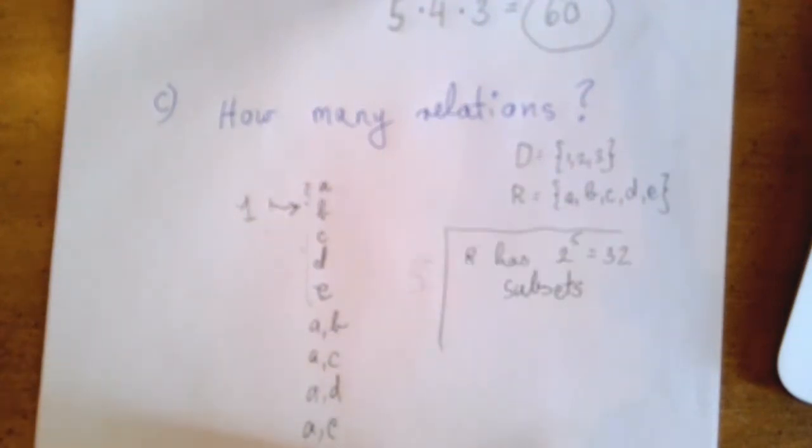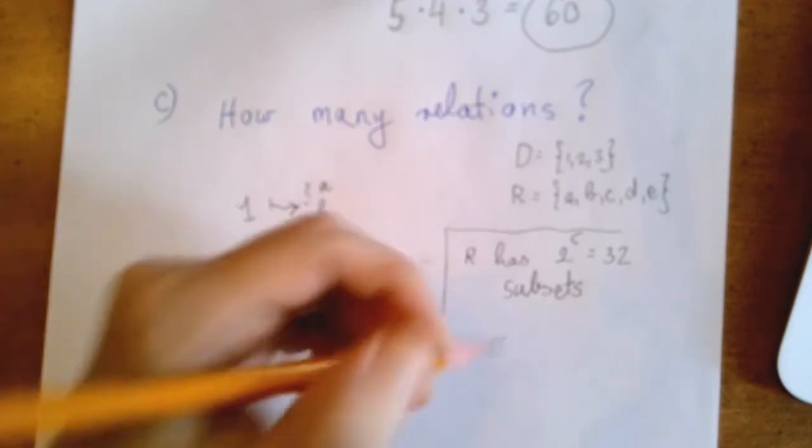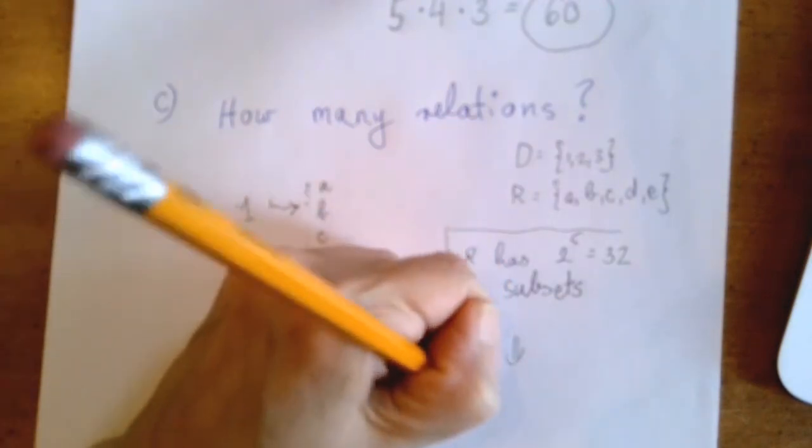But we have to be very careful because one thing that is not allowed is the empty set. One is in the domain, which means that something was assigned to one. So every subset is okay except for the empty set, and that gives us 31 subsets.